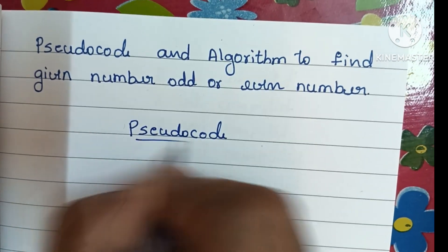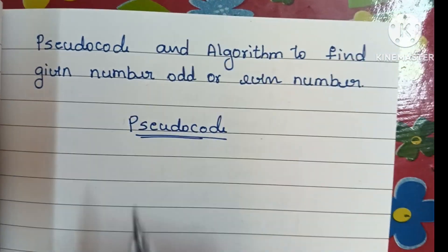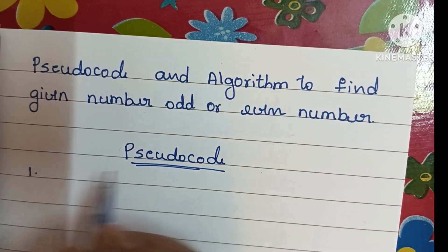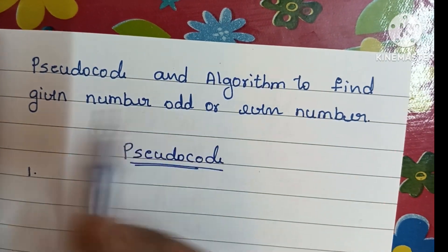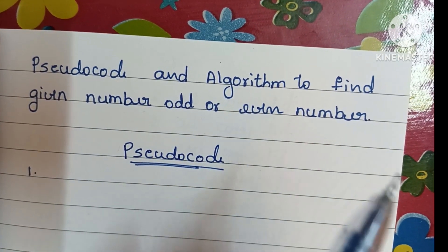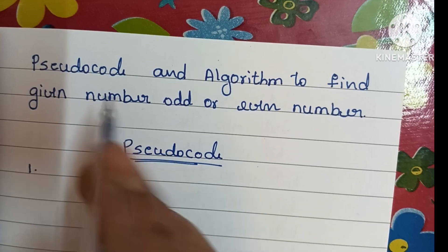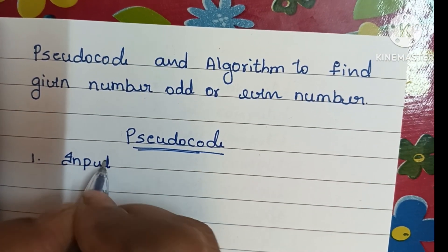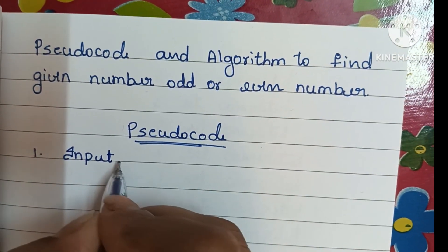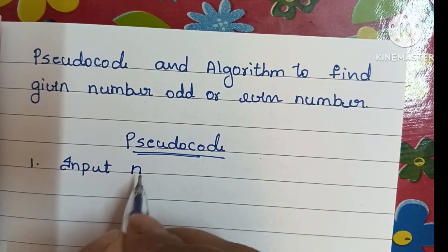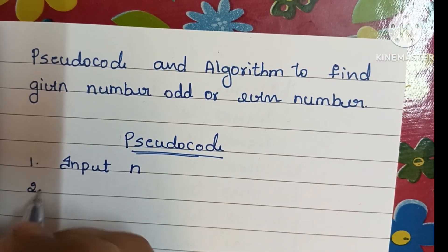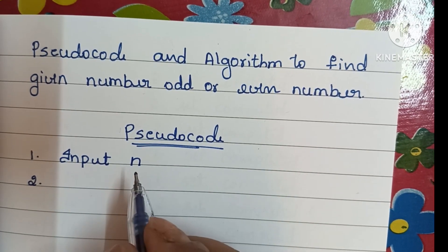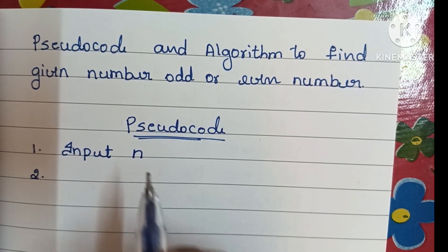Pseudocode is a detailed description of a solved problem. It is in a user-readable form. To find whether the given number is odd or even, first we have to input a number. So initially we write: input n, that is a number. Next, we have to find whether the given number is odd or even.